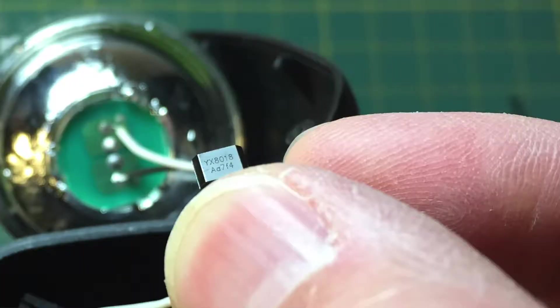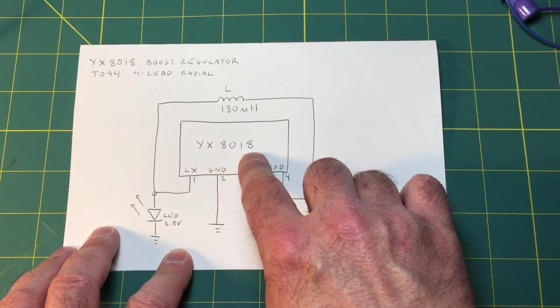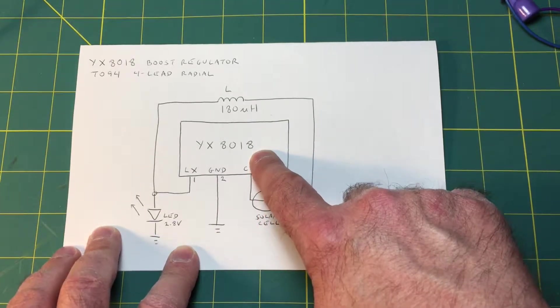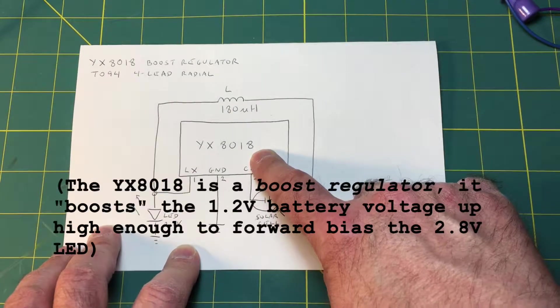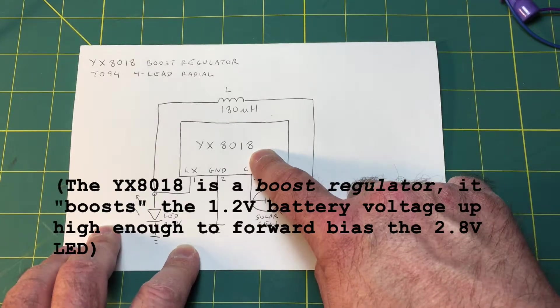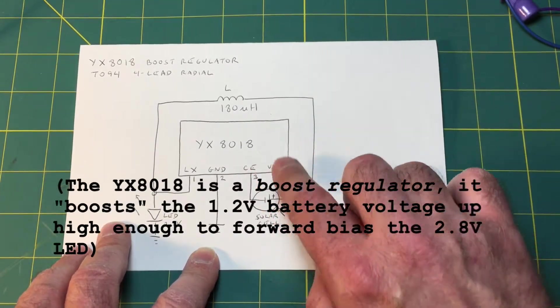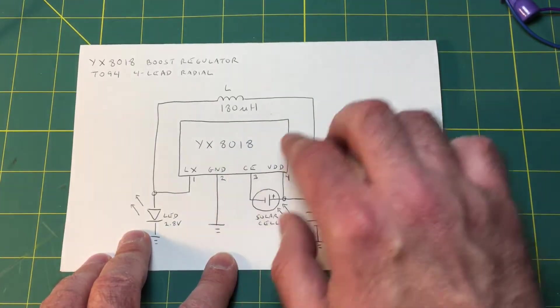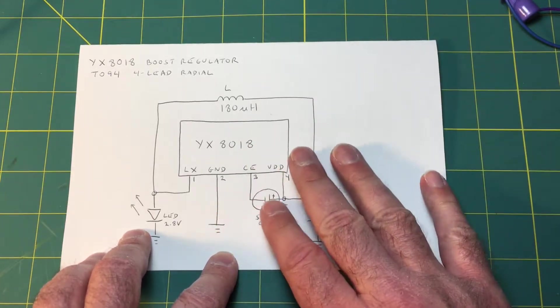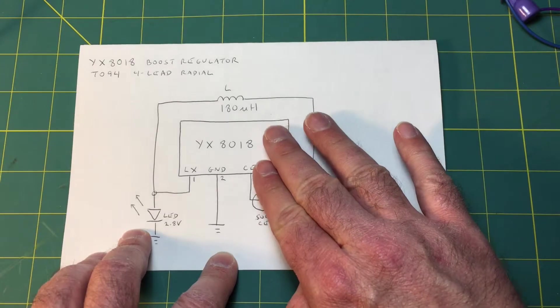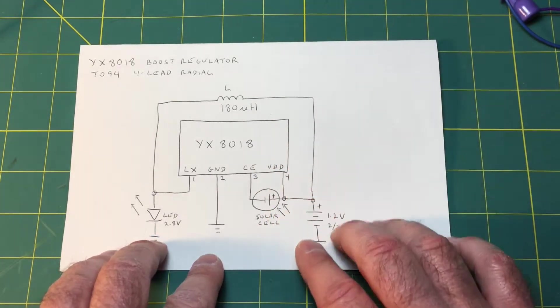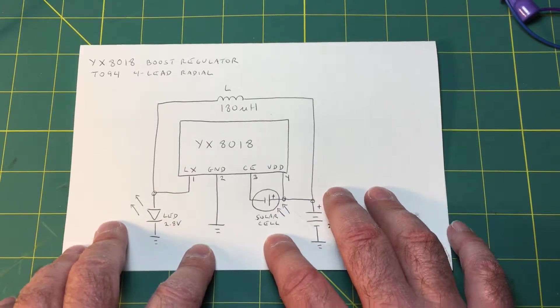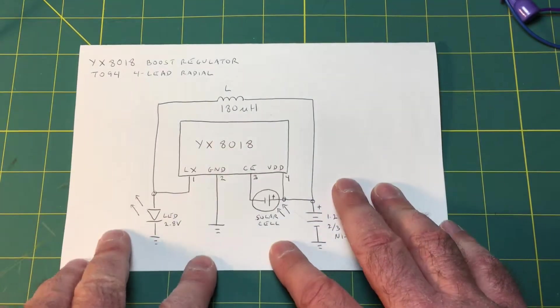I was able to read the number of the IC, it's YX8018. If you do a Google search or Yahoo search on this part number you're going to find quite a bit of material, you'll be able to find data sheets. Most of the ones I found were in Chinese but there's still some good information there. I also found a number of really good articles where people have reverse engineered these little solar lights and figured out how they work.